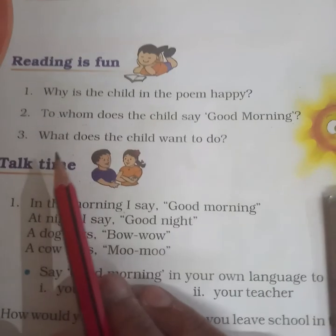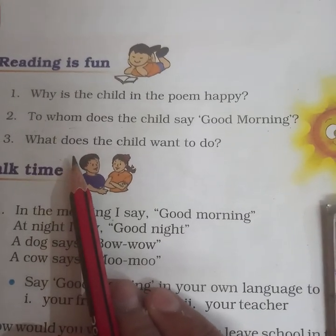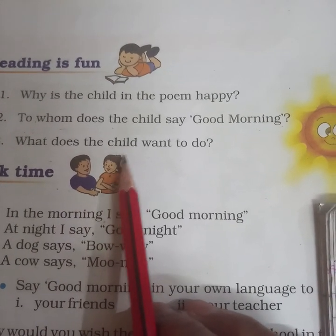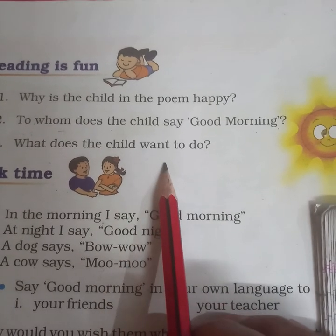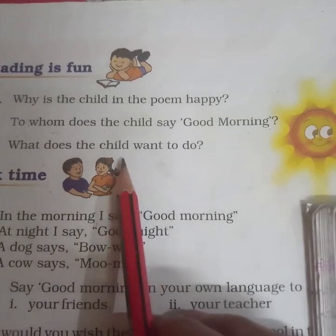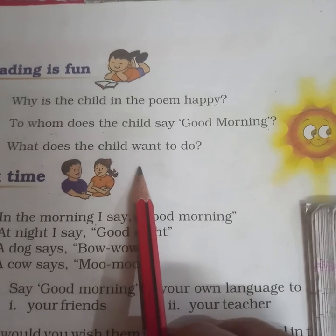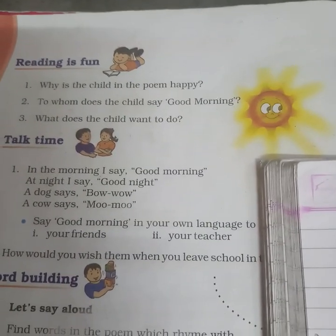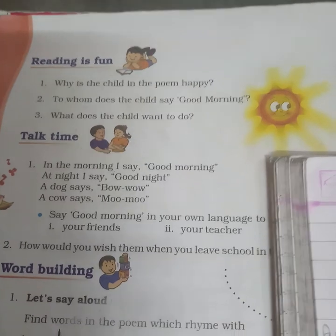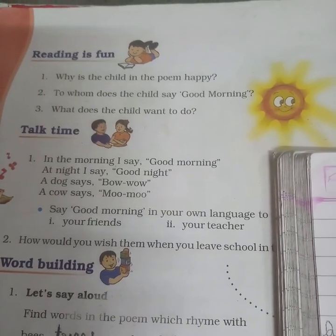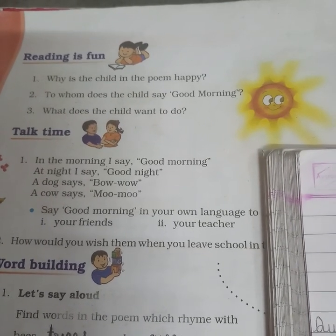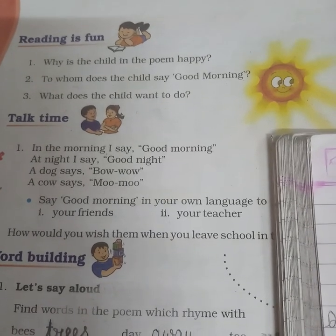Question number 3: What does the child want to do? 'What' means 'kya', 'does' means 'karna', 'the child' means 'bacha', 'want' means 'chahana', 'to do' means 'karna'. So: what does the child want to do? The child wants to go out and play with the sun, sky, wind, trees, grass, and bees. Now we will write question number 3 with good handwriting.